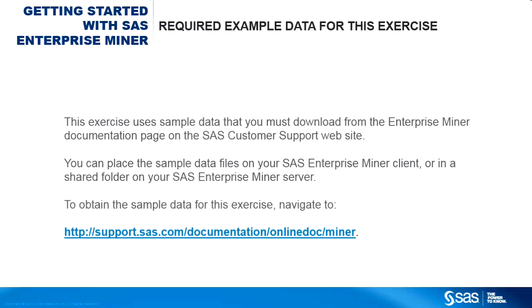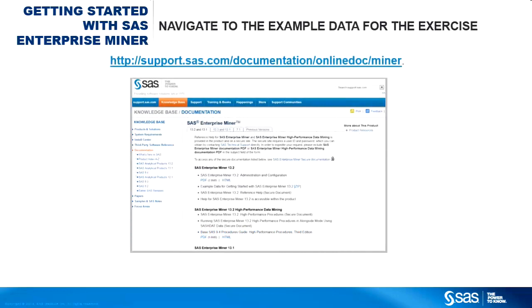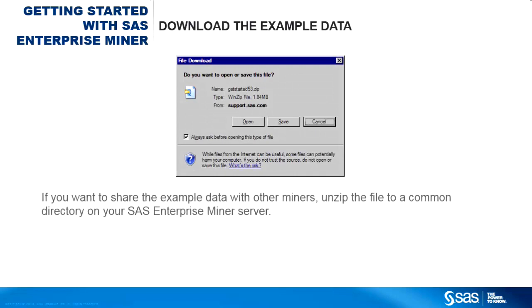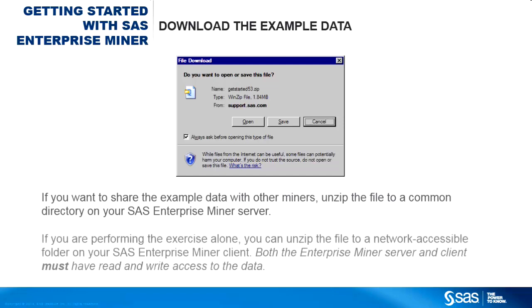To obtain the sample data for this exercise, navigate to http://support.sas.com/documentation/onlinedoc/miner. Look for the item named Example Data for Getting Started with SAS Enterprise Miner 13.2. If you want to share the example data with other miners, unzip the file to a common directory on your SAS Enterprise Miner server. If you're performing the exercise alone, you can unzip the file to a network-accessible folder on your SAS Enterprise Miner client. It's important to remember: both the Enterprise Miner server and client must have read and write access to the data.